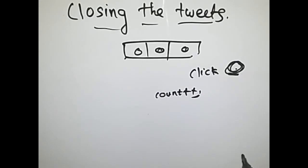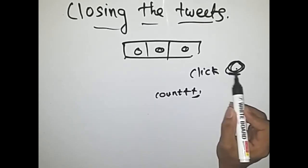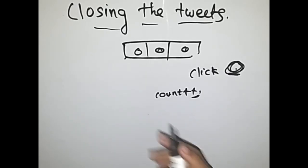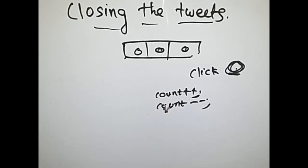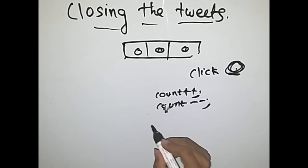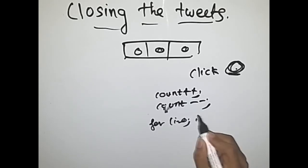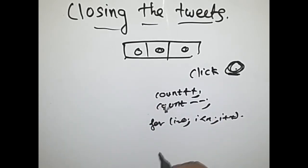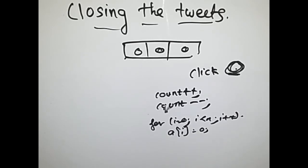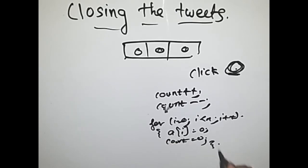After count plus plus the counter becomes one. If the element at the click index is already equal to one, make it zero and do count minus minus. If we get 'close all' as input, use a for loop — for i equals zero, i less than n, i plus plus — initialize each element to zero and also set count equal to zero.